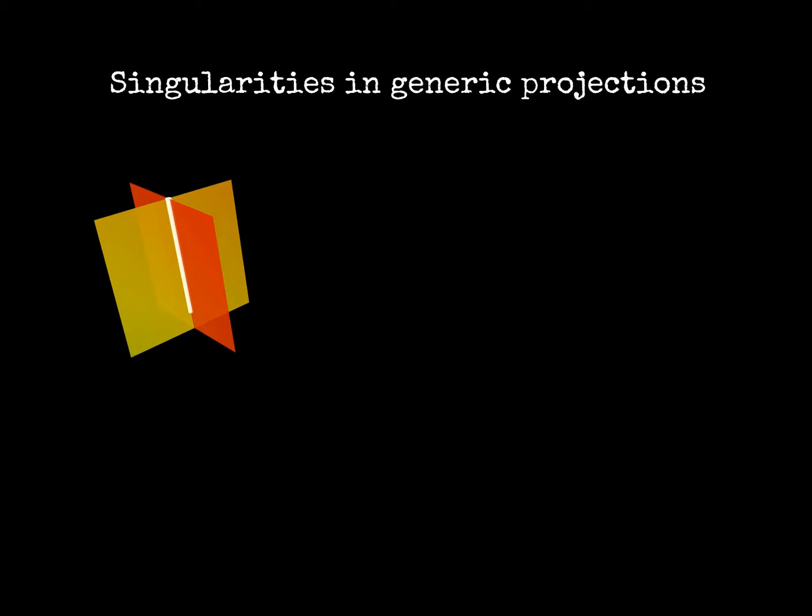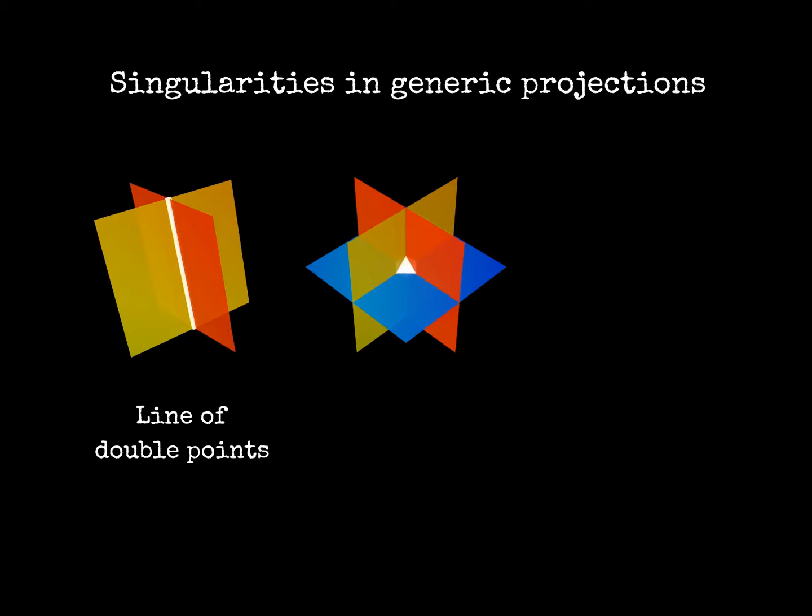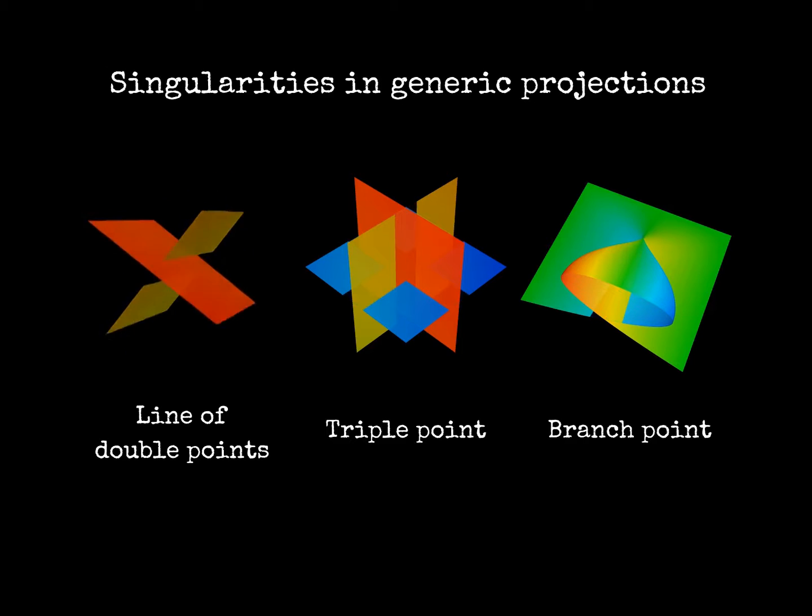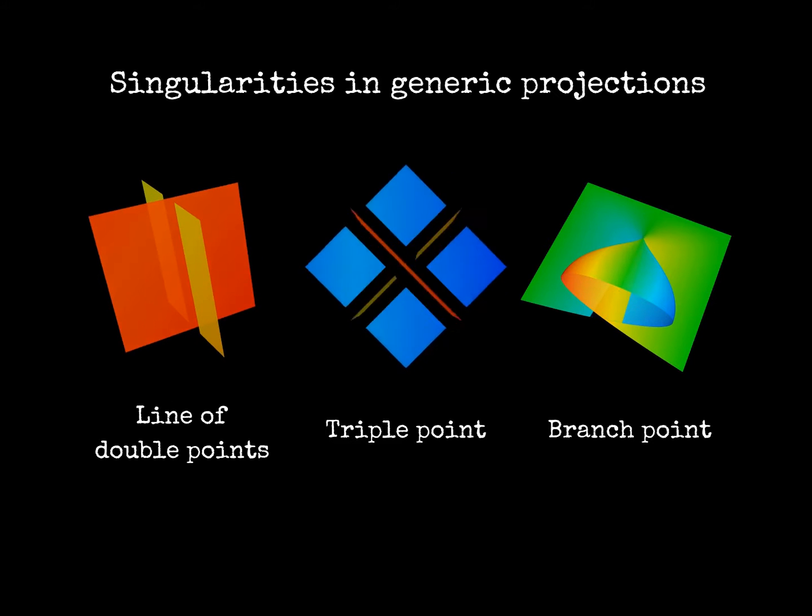To sum up, in three dimensional projections of knotted surfaces we see lines of double points, isolated triple points, and isolated branch points. In the following, we will mainly consider double points.